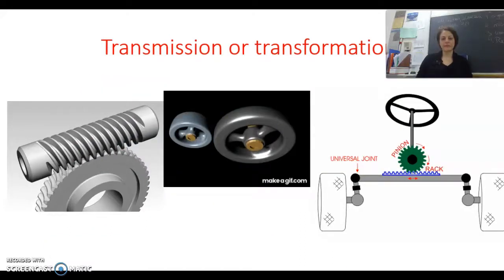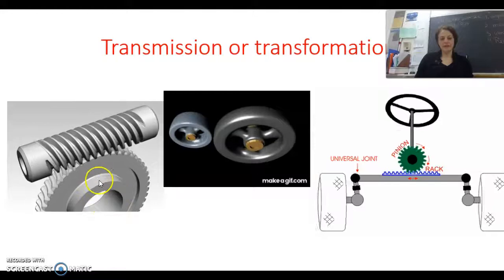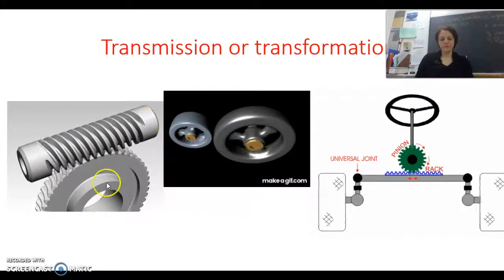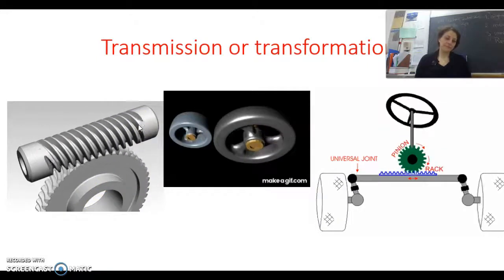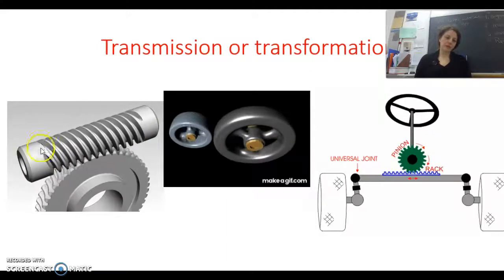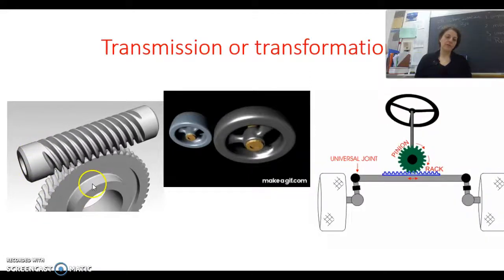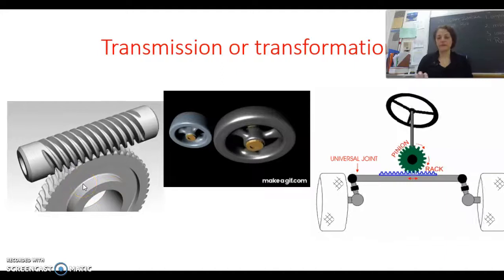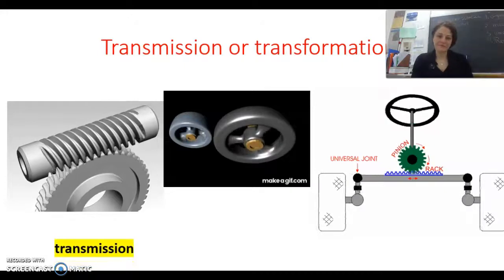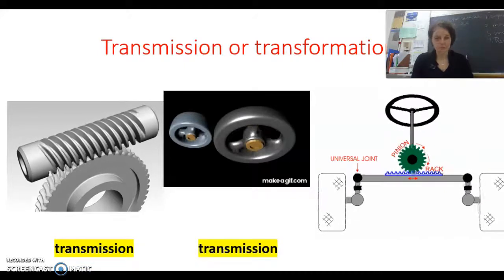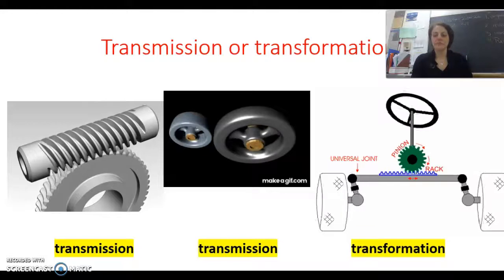All right, let's proceed with these three more mechanisms. So notice here we have that gear with a worm gear. Generally the gear is the driver and the worm gear is the driven. And if we did the opposite trying to make this one the driver and make it turn, it would cause the gear at the bottom to jam. So that is a transmission. What's the next one? Transmission again, you got it. And the last one? Transformation, good job.